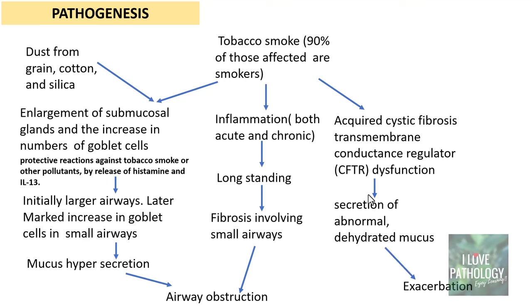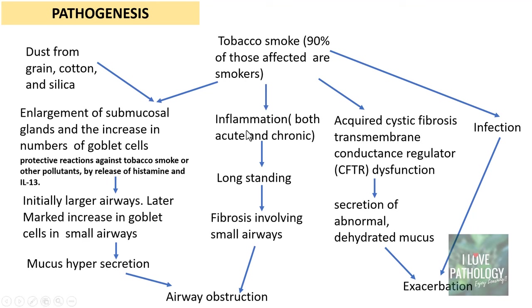This leads to exacerbation of all the symptoms found in chronic bronchitis. Tobacco smoke can also result in infection, again because of impaired mucociliary clearance. These patients are more susceptible to development of infections, and infections can further exacerbate all the features of chronic bronchitis. The key takeaway in pathogenesis is hypersecretion of mucus due to enlargement of submucosal glands and increase in the number of goblet cells.